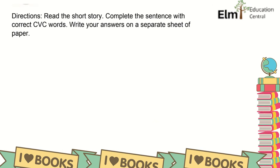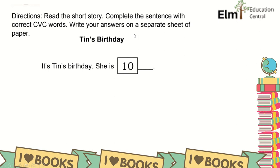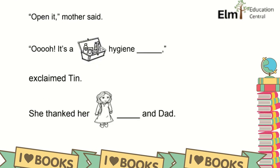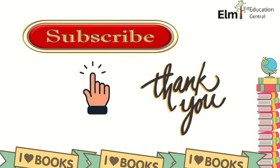Another activity: read the short story and complete the sentence with the correct CVC words. Write your answers on a separate sheet of paper. It's all about Ting's birthday. It's Ting's birthday. She is ten. Mom and dad gave her a gift. They placed it in a box. 'Open it,' mother said. 'Ooh, it's a hygiene kit!' exclaimed Ting. She thanked her mom and dad. 'Thank you very much.'